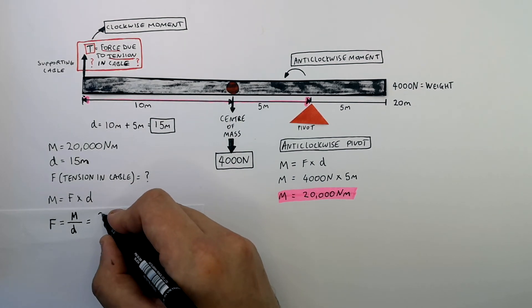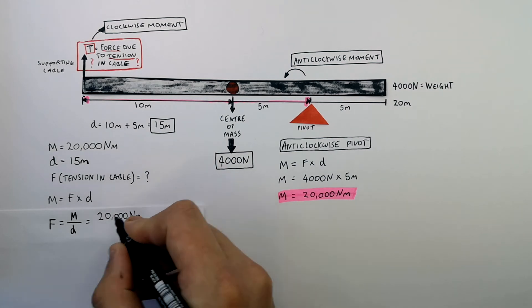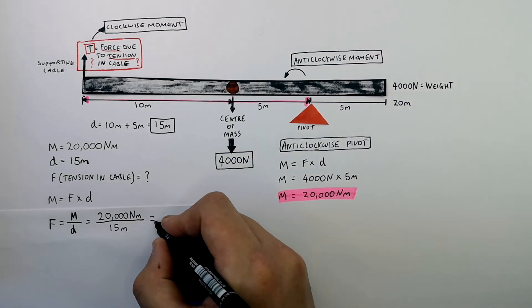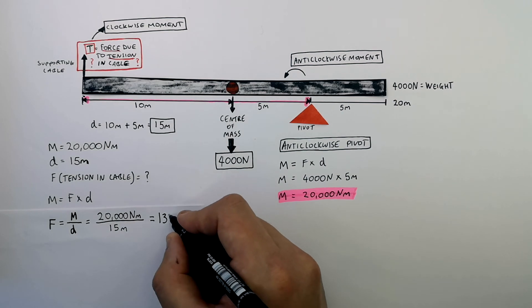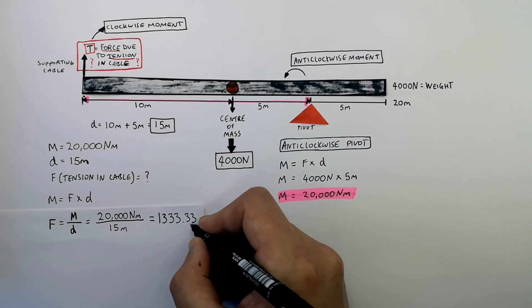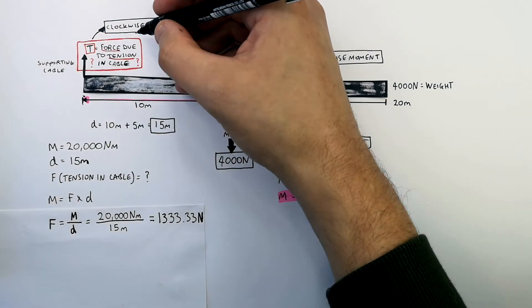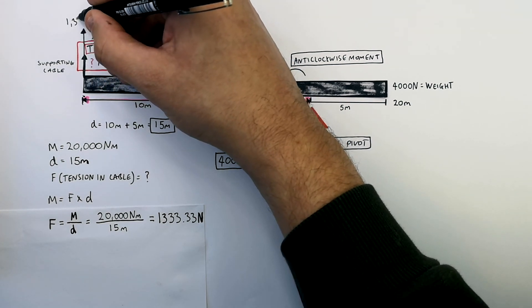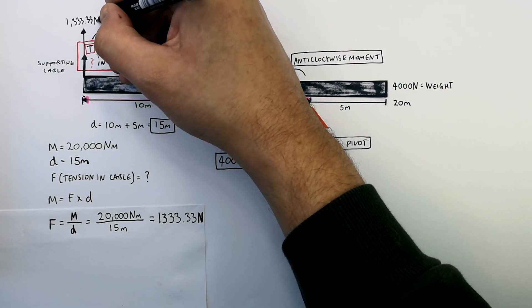So the tension in the supporting cable equals 20,000 newton metres divided by 15 metres. The tension equals 1,333.33 newtons.